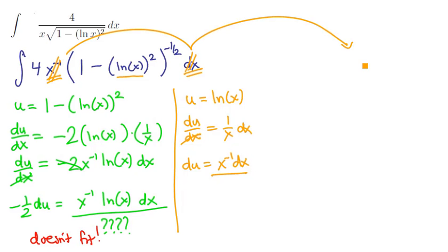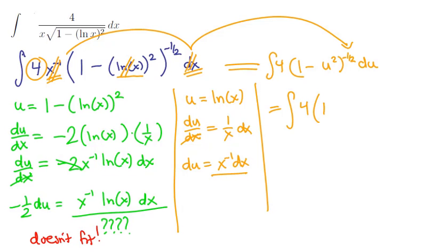These two terms are replaced with du. The ln of x is replaced by a u, so what we have here is the expression 1 minus u squared to the negative 1 half, and don't forget that there's that 4 right there. So this is our integral. We have the integral of 4 times 1 minus u squared to the negative 1 half du.